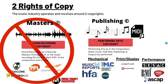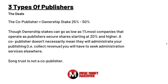Now I need to explain the three types of publishers. First, the co-publisher: co-publishing equals ownership — more specifically 25 to 50 percent. Ownership doesn't necessarily mean they do all the back-end paperwork for you. Ownership stakes can go as low as 1%, but most companies that operate as publishers secure shares starting at 20% and higher.